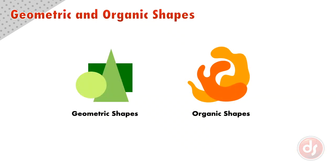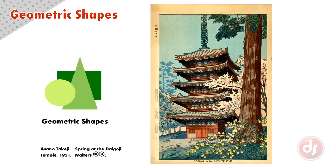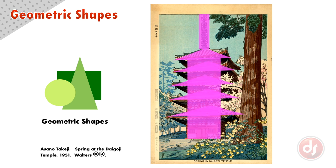Shapes can also be broken down into categories of geometric and organic. Geometric shapes are mathematically repeatable, like a circle, triangle, square, or other similarly uniform shape. Geometric shapes tend to feel more man-made. This woodblock print of a Shinto temple emphasizes the strong geometric rectangular and triangular shapes by contrasting it with the natural elements of the surrounding forest.